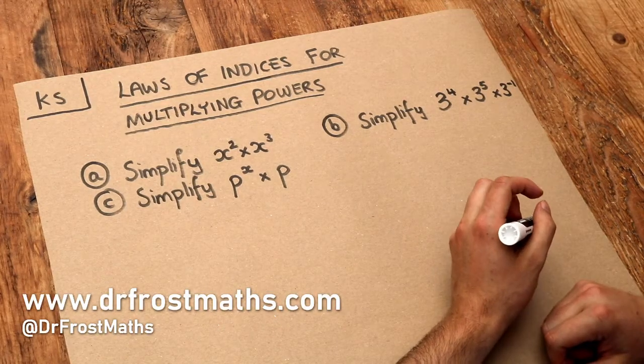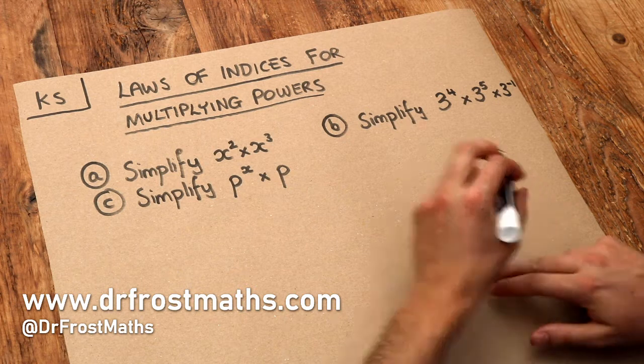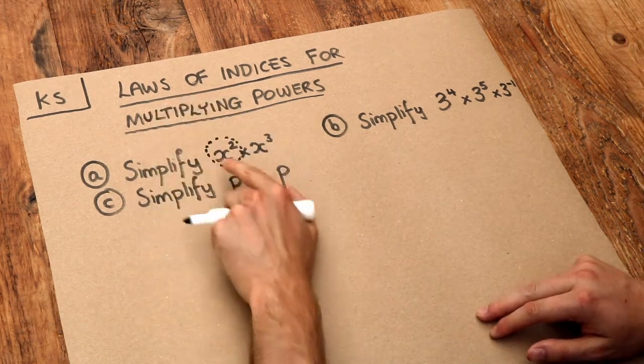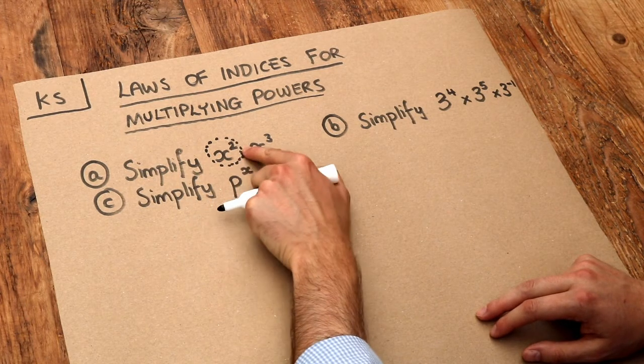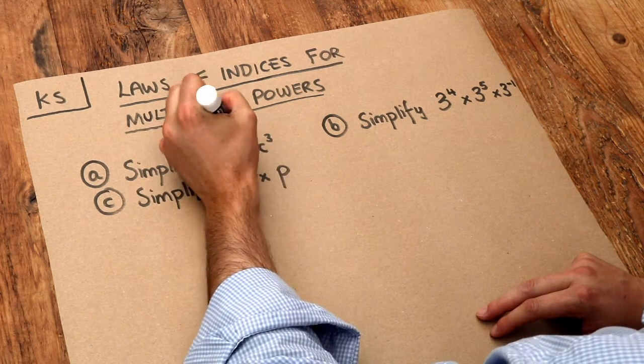Hello and welcome to this Dr. Frost Maths key skill video on laws of indices for multiplying powers. Remember that x squared is known as a power, the x itself is known as the base, and the little number, this 2, is known as the index or the exponent.